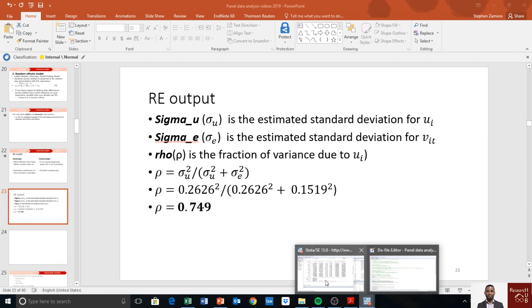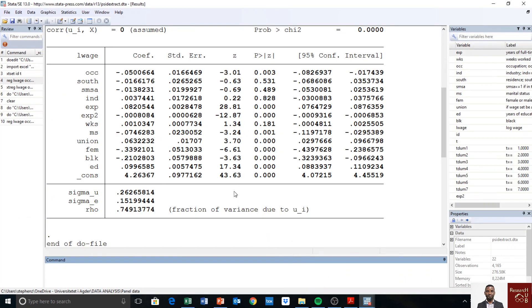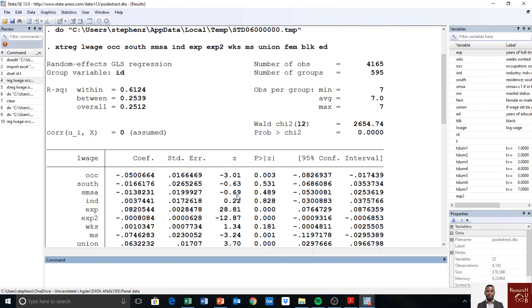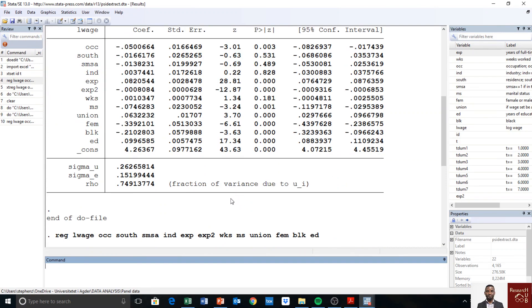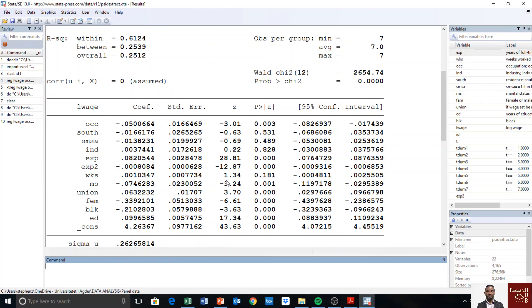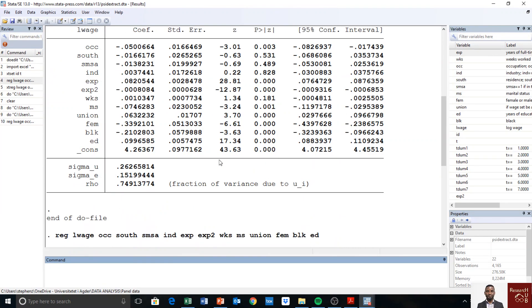So that is how we run random effects model and this is what you need to explain if you are running statistics or something and you can explain all this. But for published papers you need to look at which information is relevant to report. So in the next video we look into the next panel data model which is fixed effects.